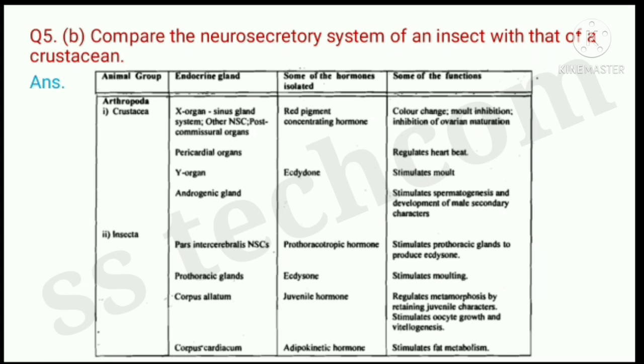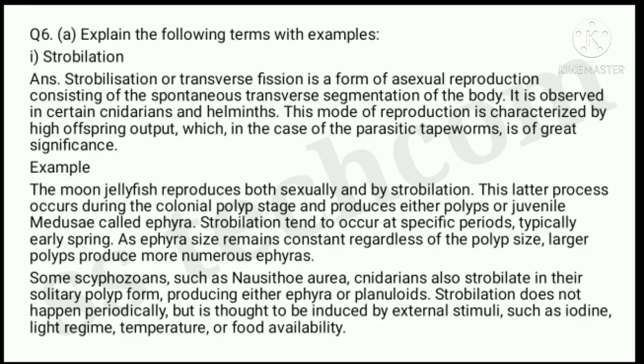Question number 5, B part: compare the neurosecretory system of an insect with that of a crustacean.